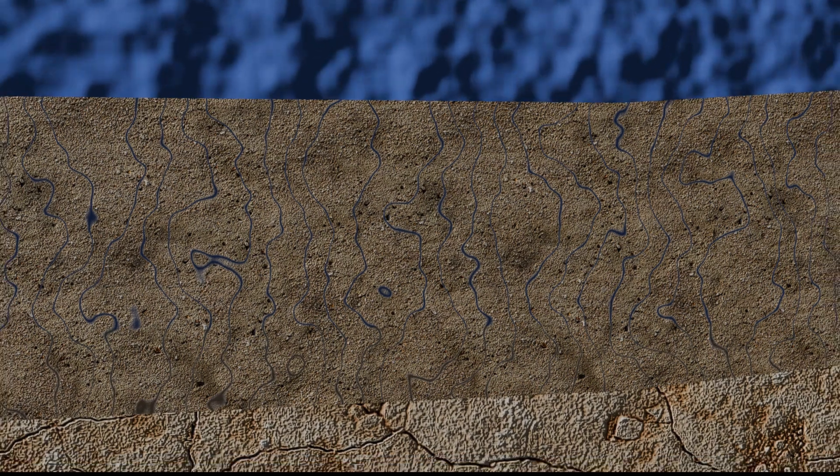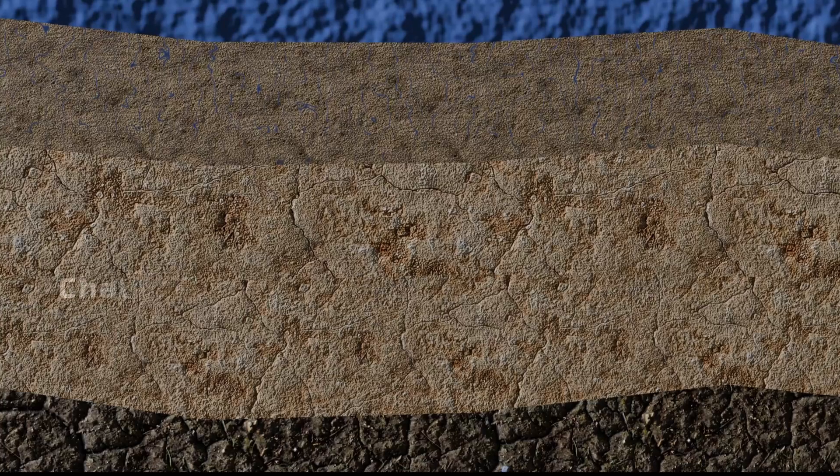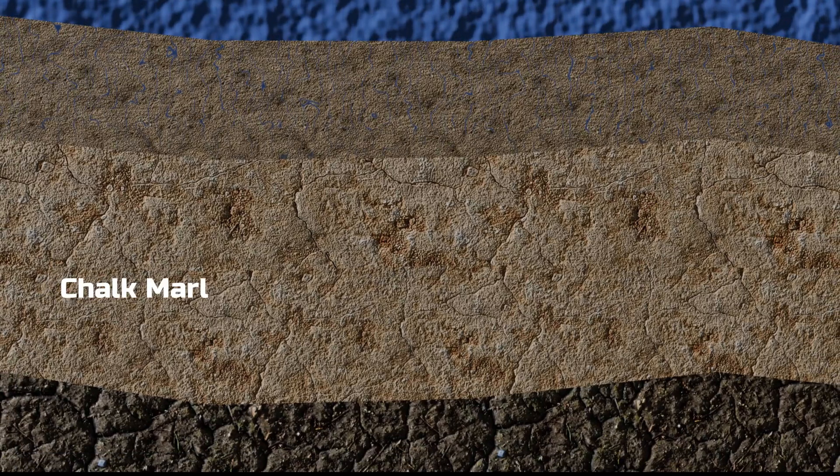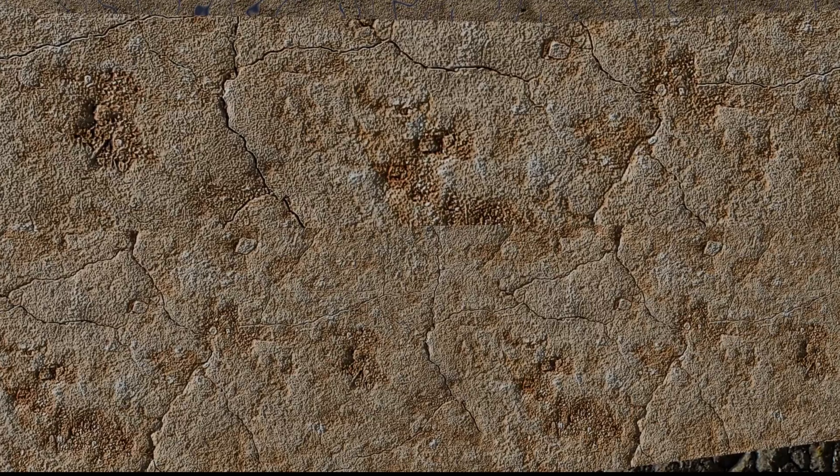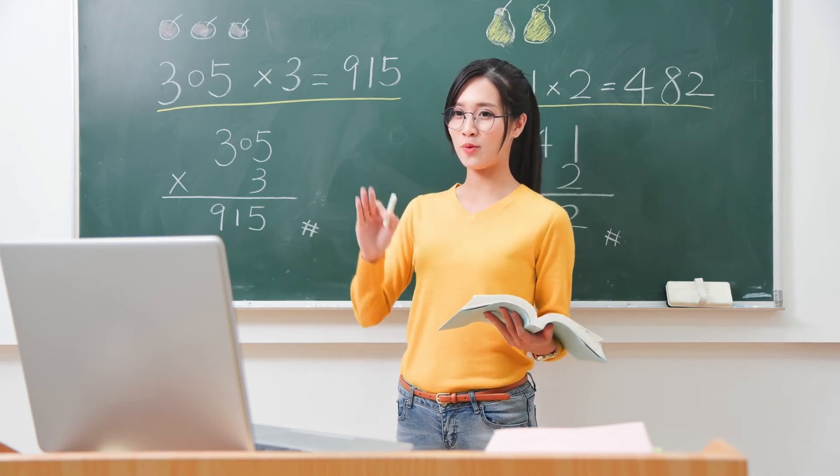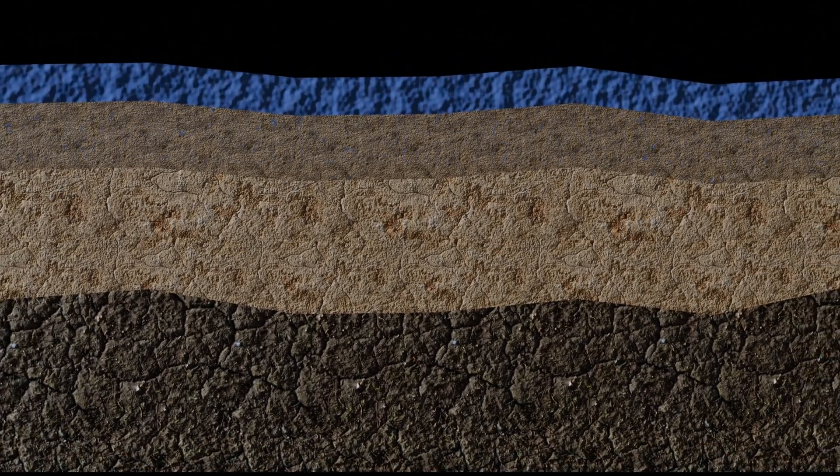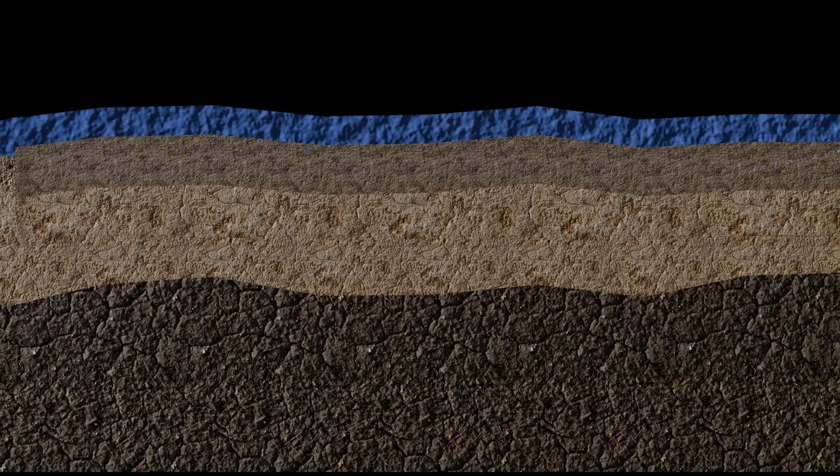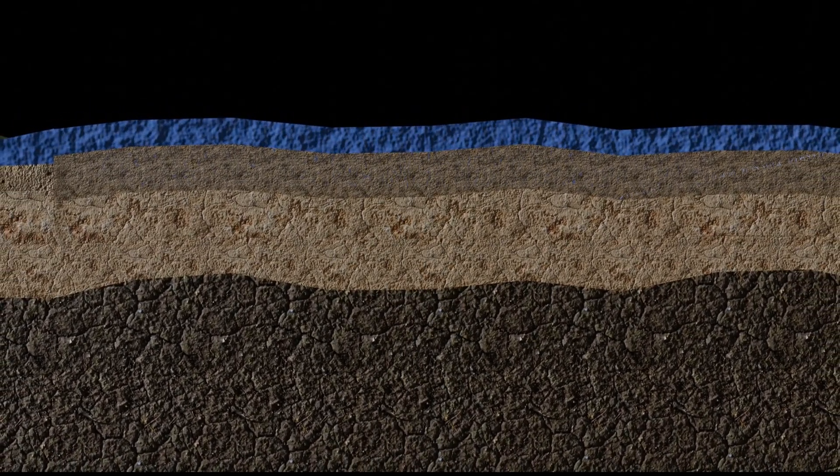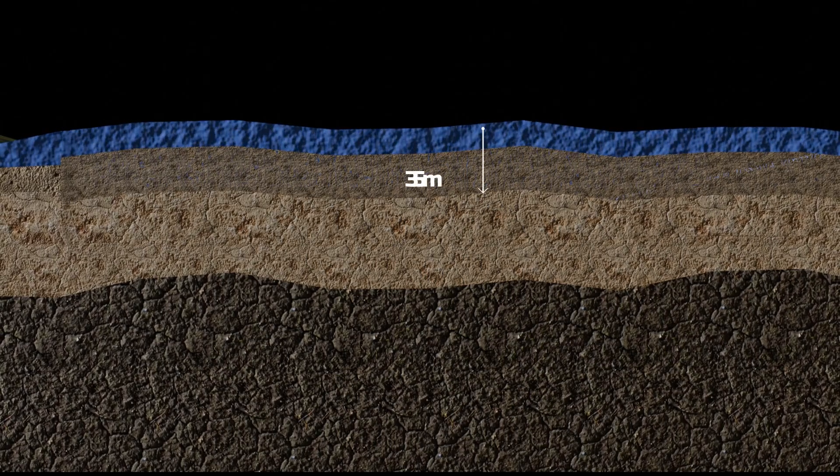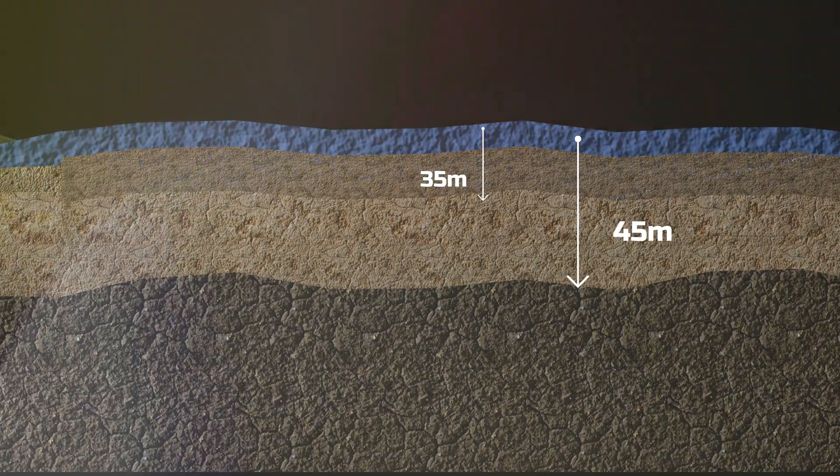Beneath this layer was another more stable layer called chalk marl. This layer was less permeable, with almost negligible cracks, making it a better option for tunneling. Chalk marl, primarily composed of calcium carbonate, is even used in schools today. However, this stone is not as strong as chalk stone, making it somewhat vulnerable to the immense pressure of seawater. Despite its limitations, chalk marl was deemed the safest layer available. It is located 35 to 45 meters below the seabed.